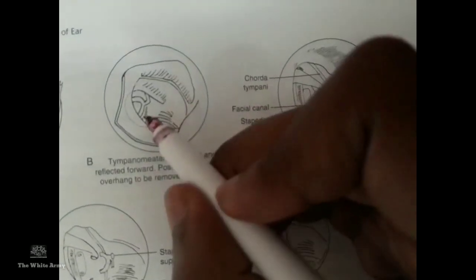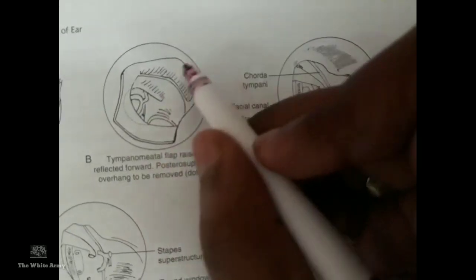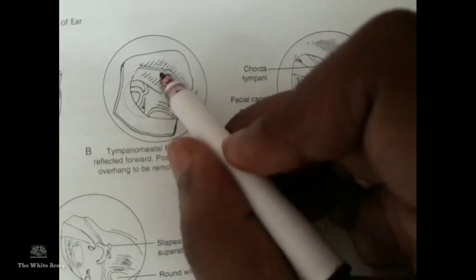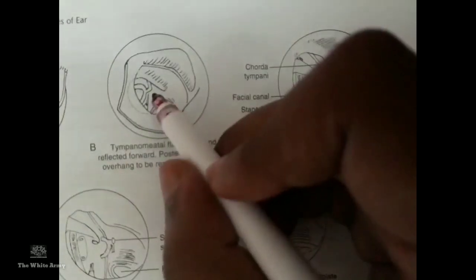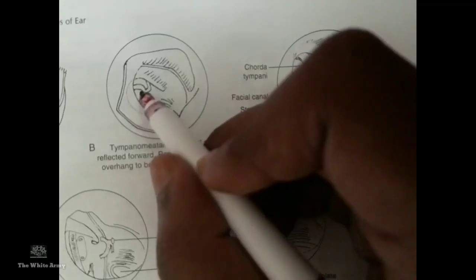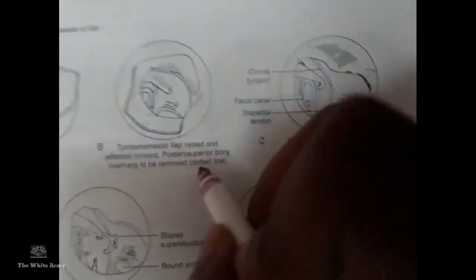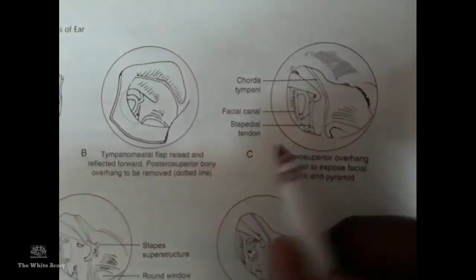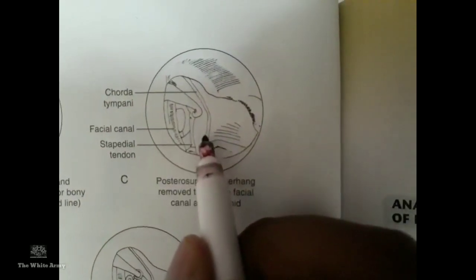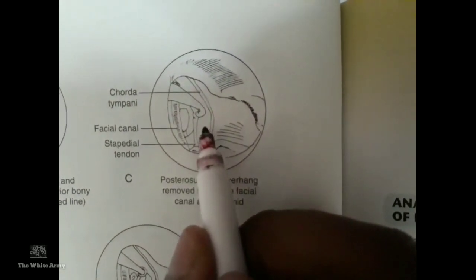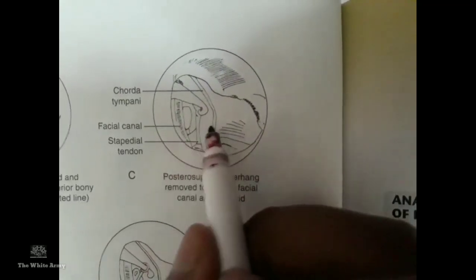After raising the flap, the incus, stapes, malleus (along the tympanic membrane), promontory, and round window are visualized. For better observation of the stapedial foot plate and promontory, the posterior superior bony overhang is removed. This reveals the facial canal and the chorda tympani nerve, both of which must be carefully preserved to avoid injury.